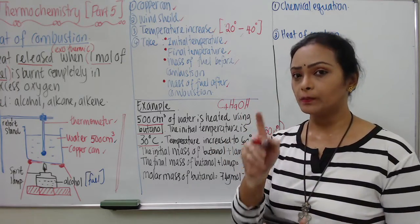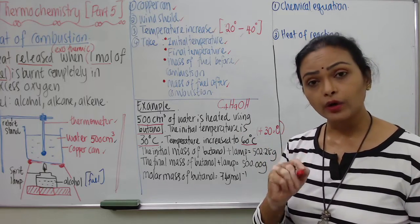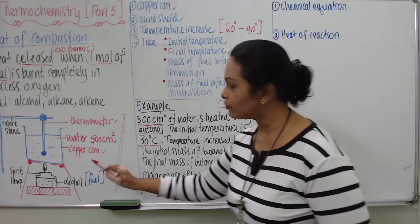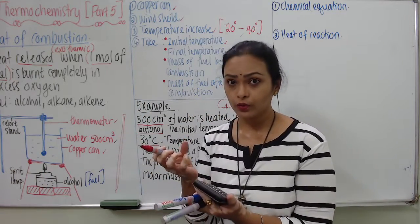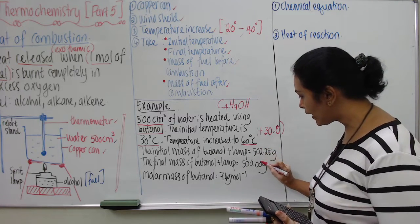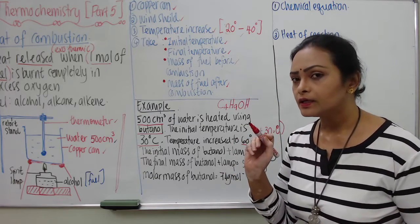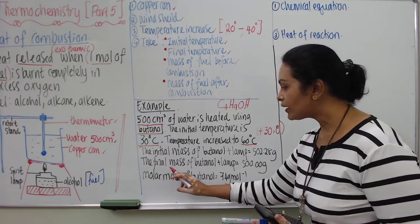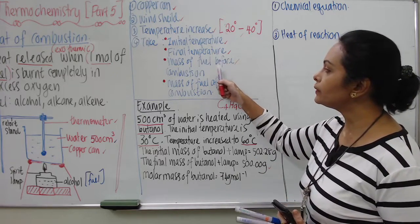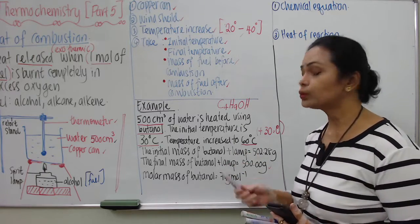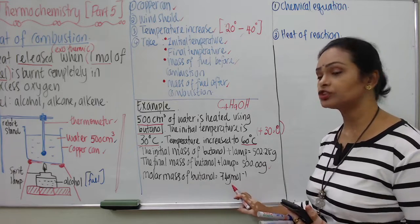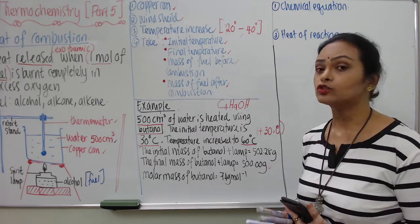The initial mass of butanol with the spirit lamp is 502.28 grams. After heating the water up to 60°C, the final mass of butanol and the lamp is 500 grams. These are all four important pieces of information needed to calculate heat of combustion. The teacher has also given the molar mass of butanol as 74 grams per mole, which is needed to find the number of moles.